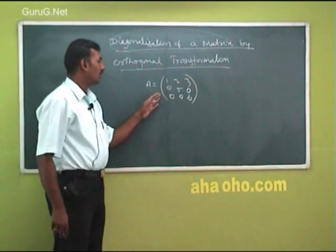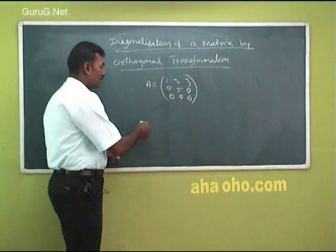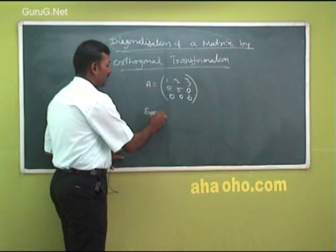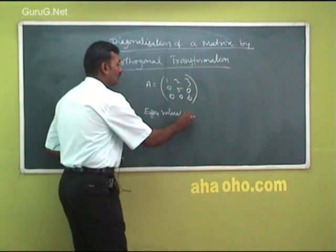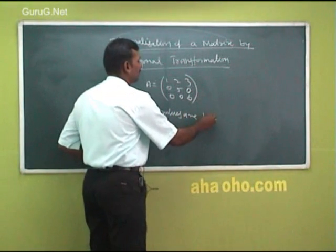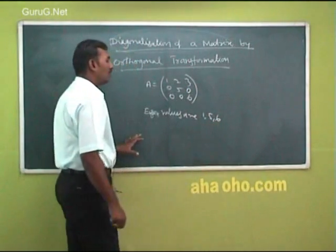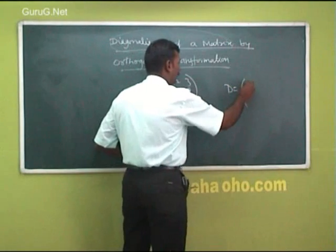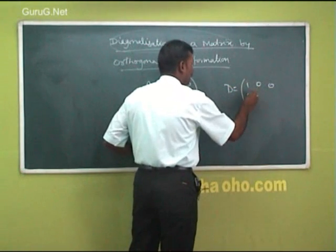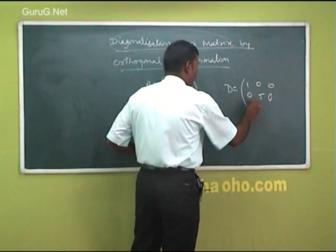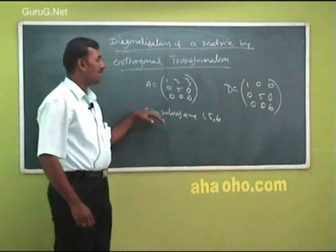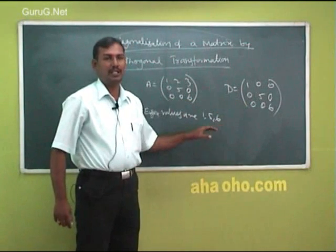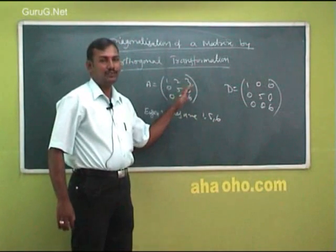Suppose this upper triangular matrix — obviously we can write the eigenvalues as the leading diagonal elements. So eigenvalues are 1, 5, 6. What will be the diagonal matrix? So 1 0 0, 0 5 0, 0 0 6. Making a given matrix into the diagonal matrix like this — that is called diagonalization of a matrix.